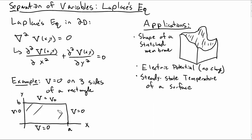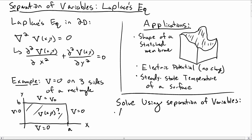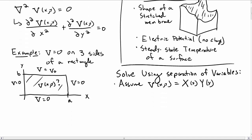v is equal to some constant up at the top, and what we want to know is what is v of x and y inside of this rectangle. To do this we're going to use separation of variables, which is a very useful technique that has a couple different steps. The first step is to assume that v of x and y can be written as X(x) times Y(y) — that's part of the separation.